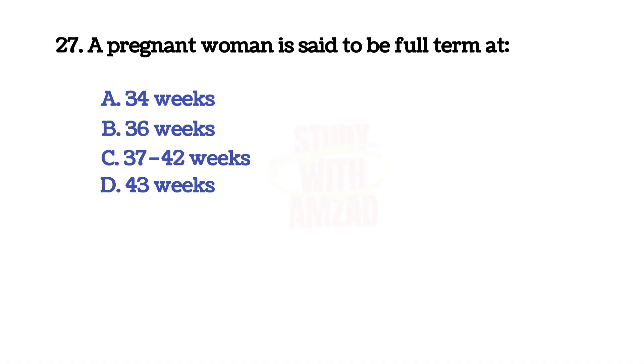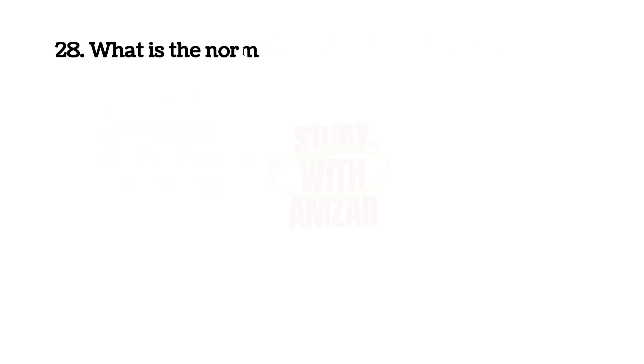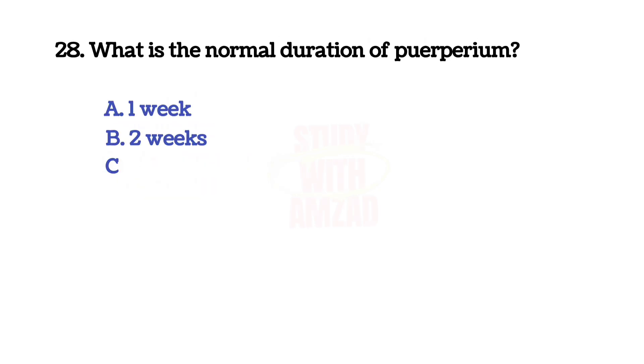A pregnant woman is said to be full term at? The answer is C: 37 to 42 weeks.